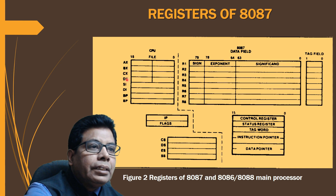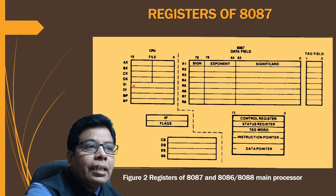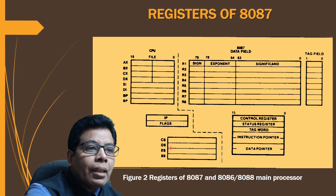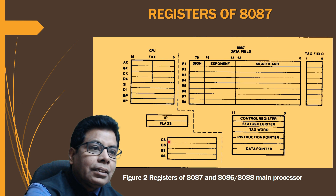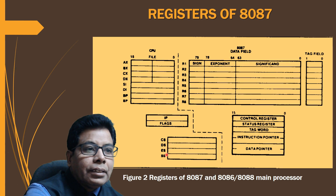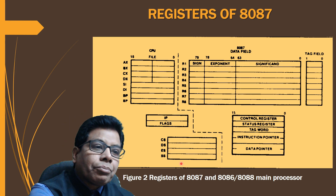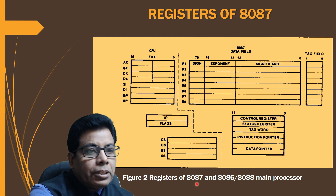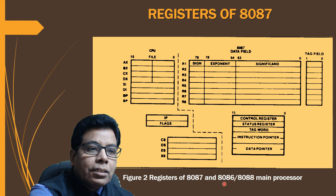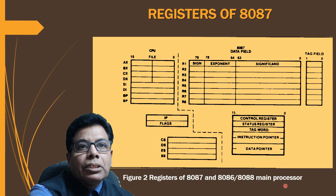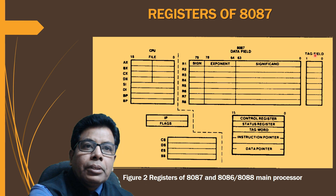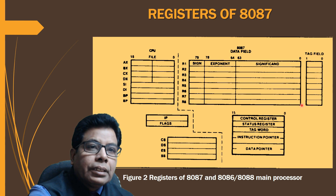The 8086 registers include AX, BX, CX, DX, SI, DI, BP, and SP — all 16-bit registers — along with the instruction pointer IP, flags register, and segment registers CS, DS, ES, and SS (code, data, extra, and stack segments). This figure shows the registers of the 8087 as well as the 8086/8088 main processor. The tag field is two bits wide, which we will discuss in detail.